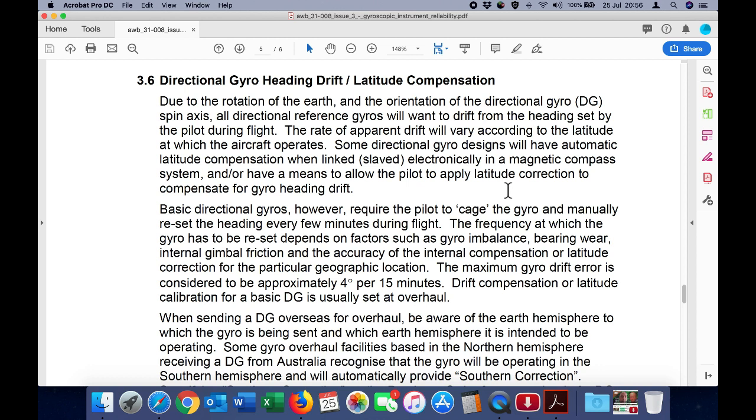Basic directional gyros require the pilot to cage the gyro and manually reset the heading every few minutes during flight. The frequency at which the gyro has to be reset depends on factors such as gyro imbalance, bearing wear, internal gimbal friction, and the accuracy of the internal compensation or latitude correction for the particular geographic location. The maximum gyro drift error is considered to be approximately 4 degrees per 15 minutes.